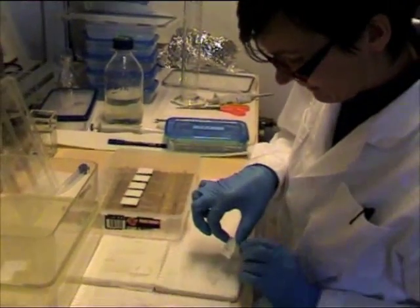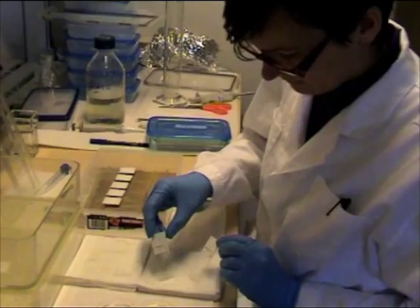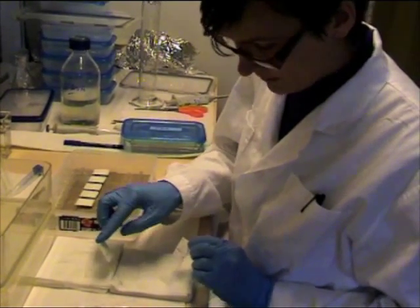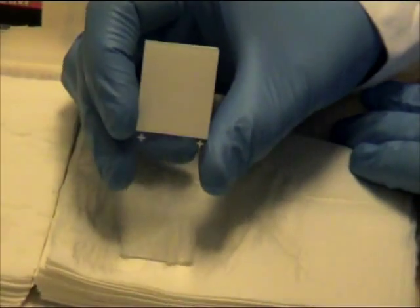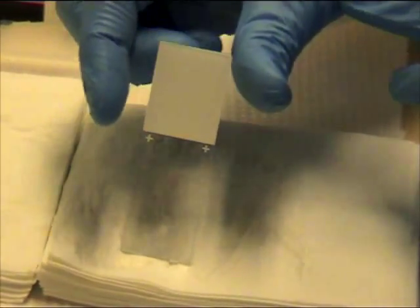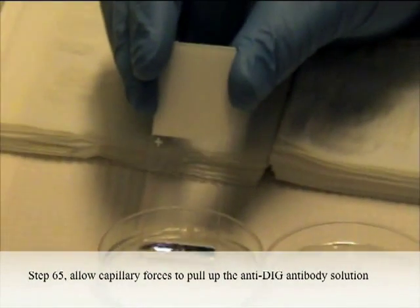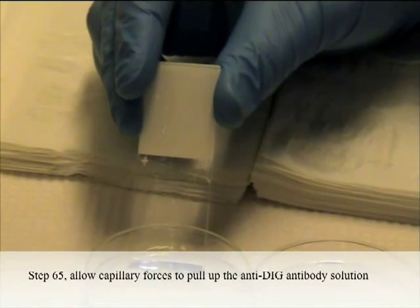The antibodies are added to the slides using Samogin. Samogin only works with ProBond plus slides or slides of a similar design. Step 65: Allow capillary forces to pull up the anti-dig antibody solution. This step is repeated.